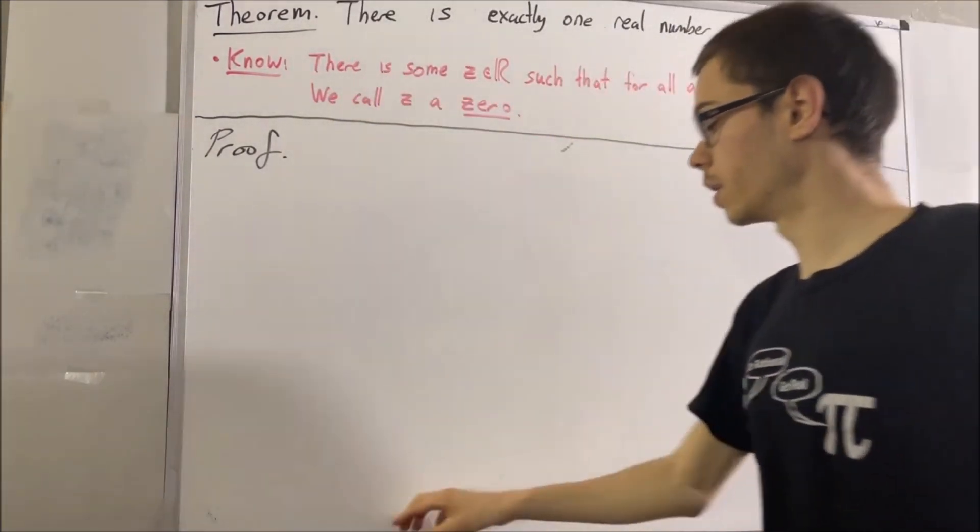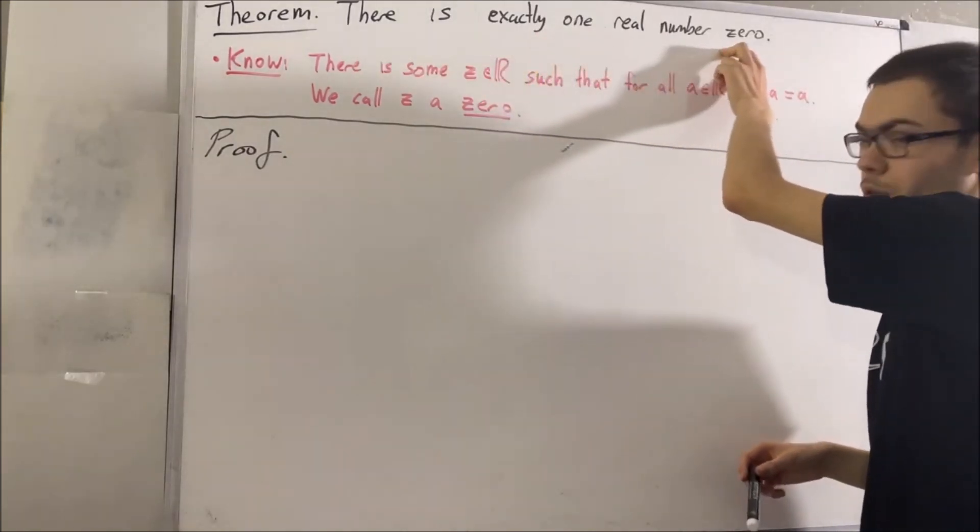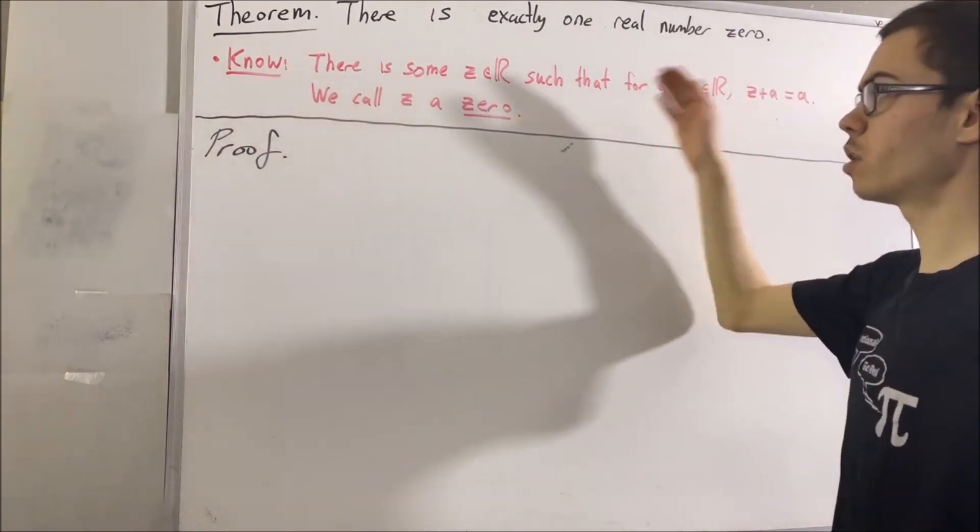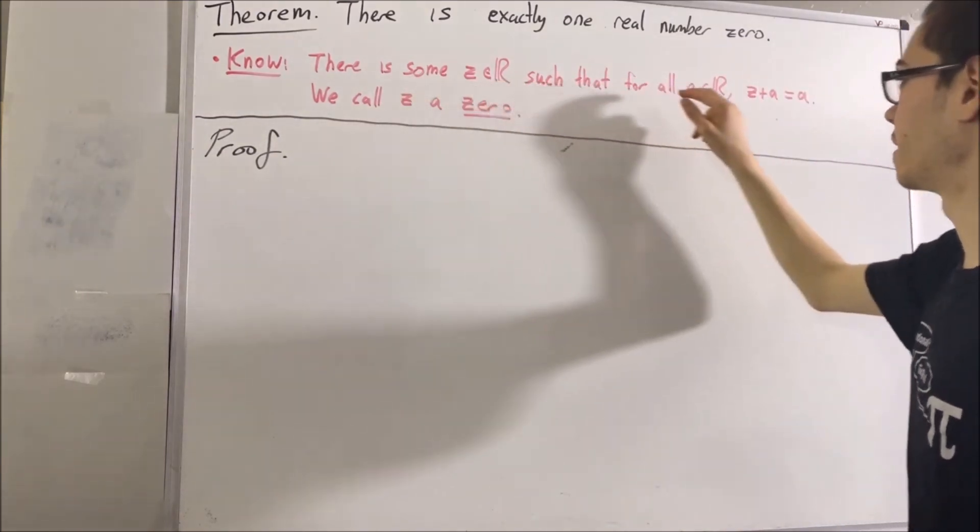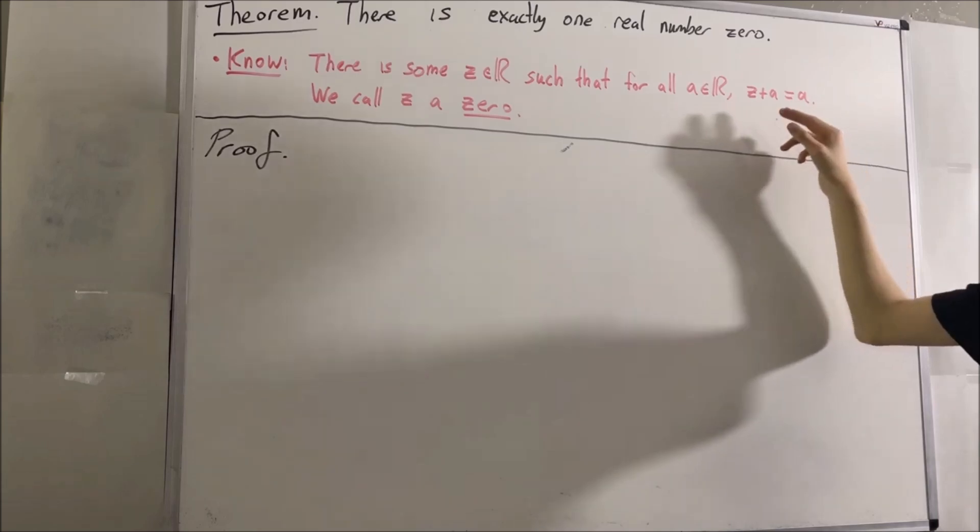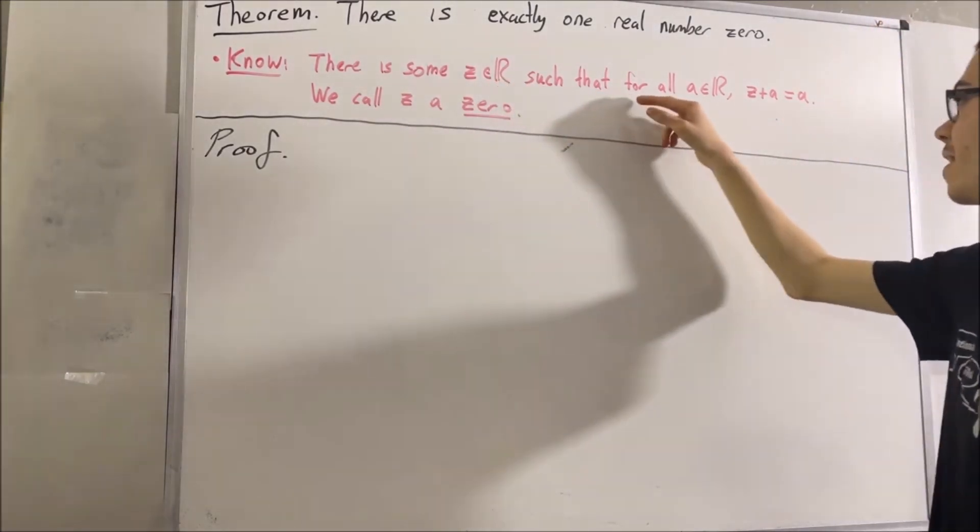But our goal is to prove that there is exactly one real number which is a zero. That is, we want to prove that there is exactly one real number z that satisfies this statement. And the way we can do that is we can suppose that there are two real numbers, say z and z prime, that satisfy this condition.